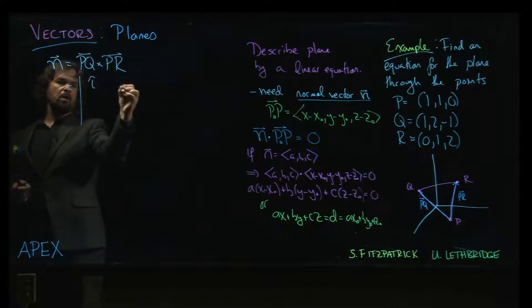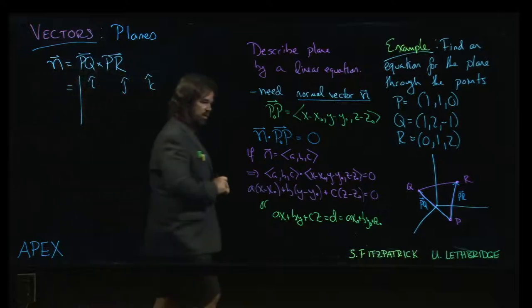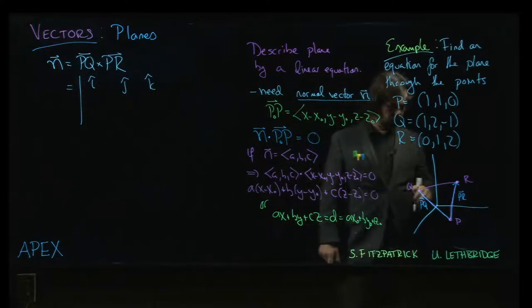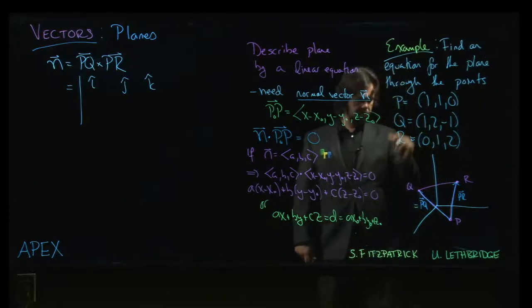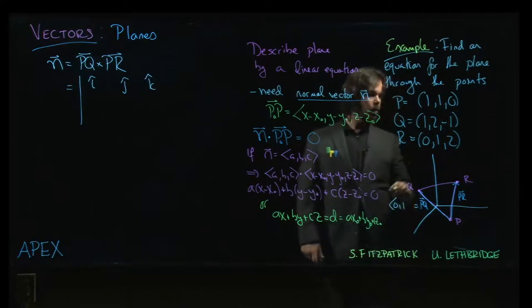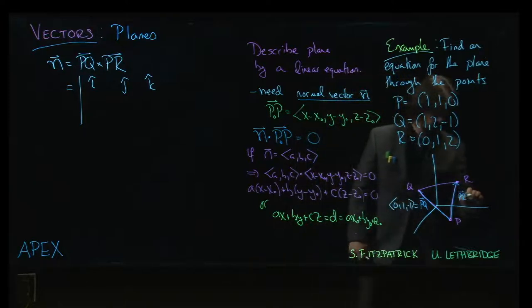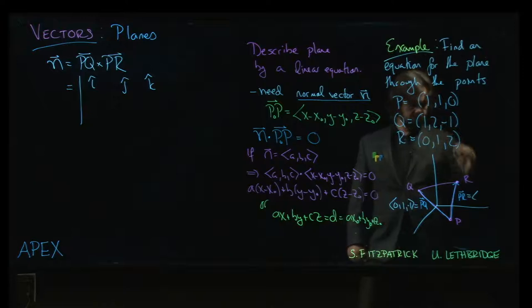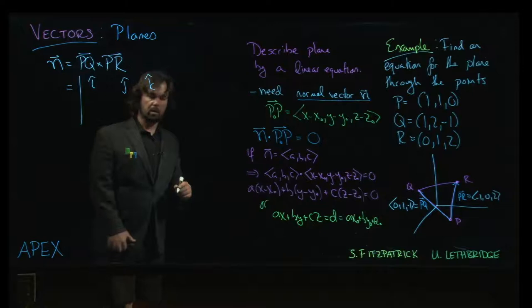So I, J, K, and of course we need those vectors. So what are those vectors? So PQ, we do head minus tail, so one minus one is zero, one minus zero is one, two minus one is one. And PR, head minus tail, we get minus one, one minus one is zero, two minus zero is two. So those are the vectors we're going to use in our cross product.